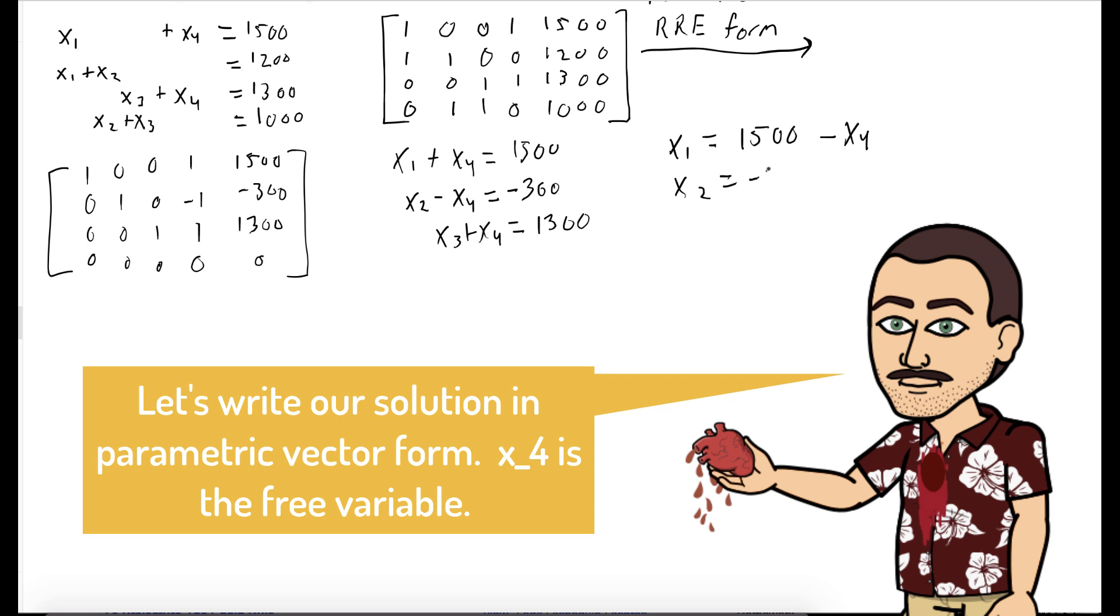So we might as well write all of our basic variables in terms of our free variables. When we do that, we get x1 is 1500 minus x4, x2 is negative 300 plus x4, and x3 is 1300 minus x4.